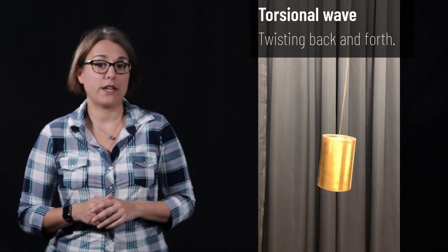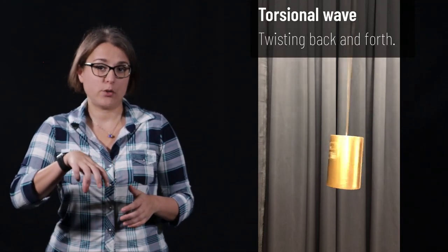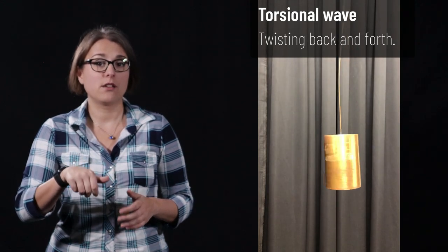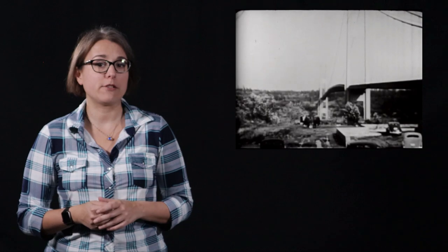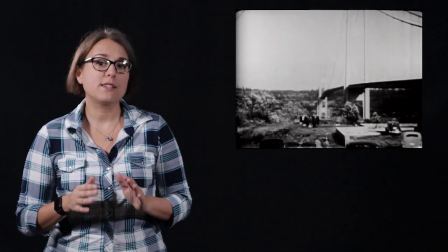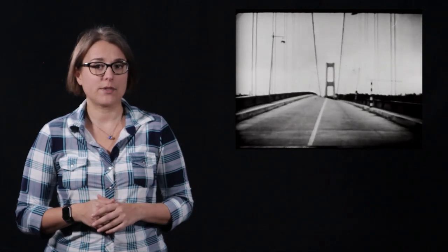Another type of wave is known as a torsional wave — a type of twisting back and forth in a periodic manner. A torsional wave is what caused the Tacoma Narrows Bridge to collapse in 1940. Winds blowing across the bridge created an amplified torsional wave in the bridge, which eventually overcame the strength of the structure, causing its collapse.